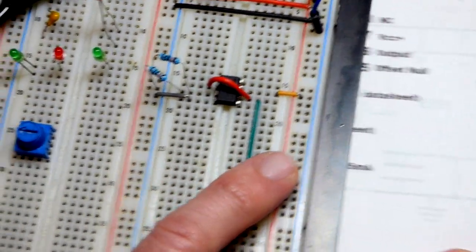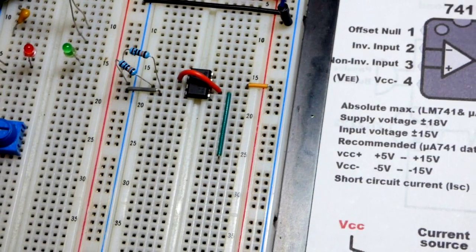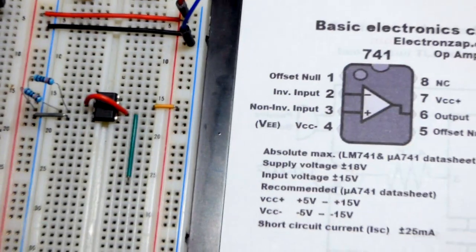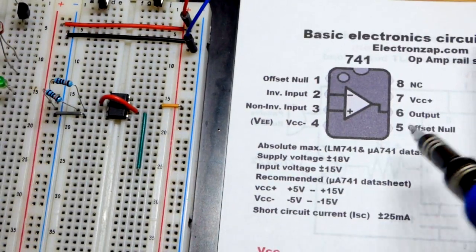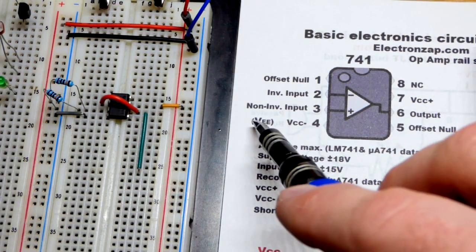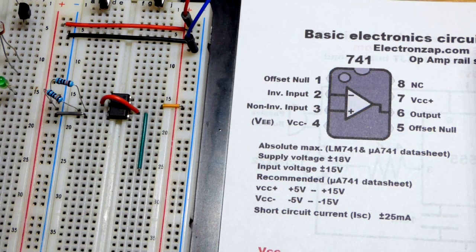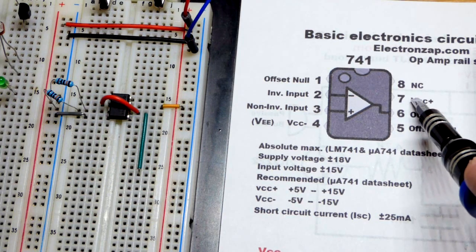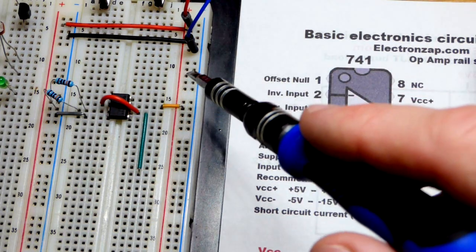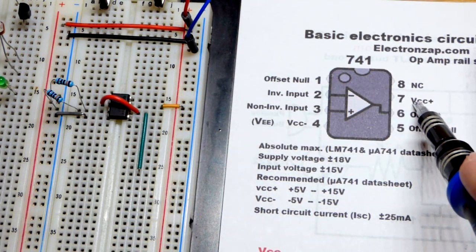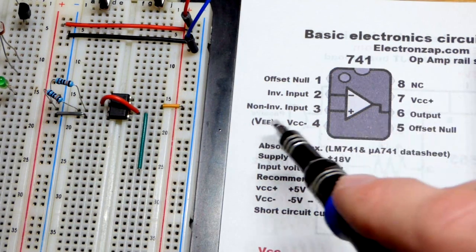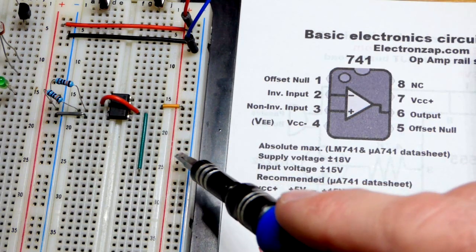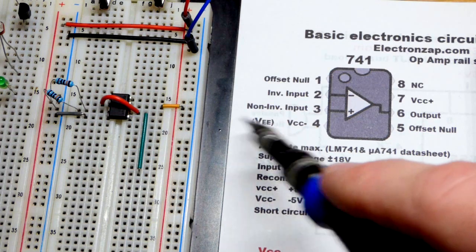We will look at the pin layout right here. Depending on where you get the pin layout for this op amp, it may be labeled a little differently. I like the VCC+ and VCC-, but you may see VEE. That goes from the transistor nomenclature where they use VCC to show the positive side of the power supply because that is where the collector of an NPN bipolar junction transistor connects.